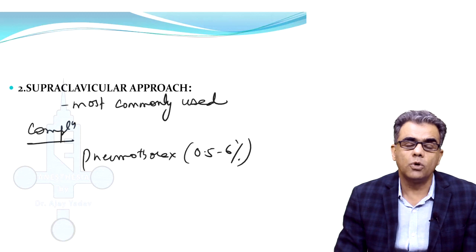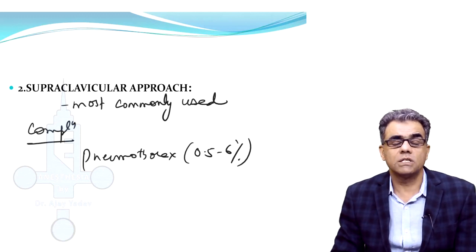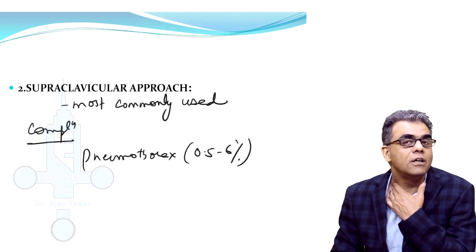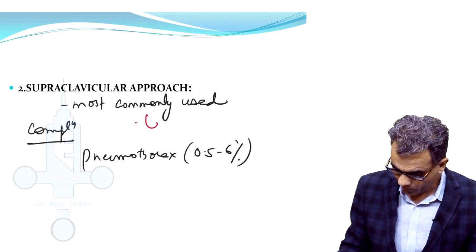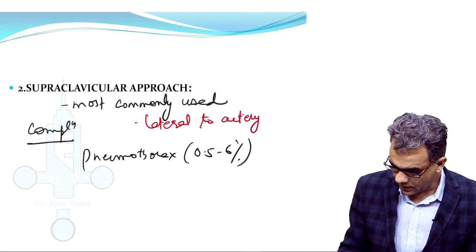Our aim should be to avoid pneumothorax and the best policy to avoid pneumothorax is that always maintain the direction of your needle lateral to the artery. This lateral is very important.